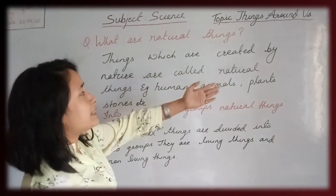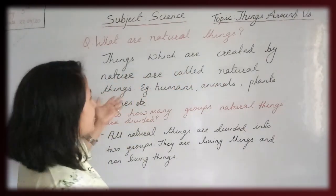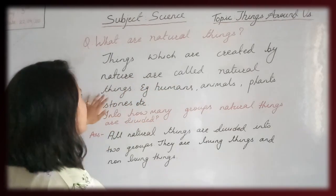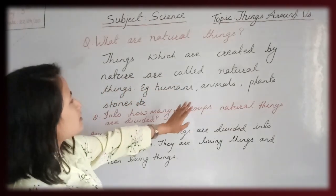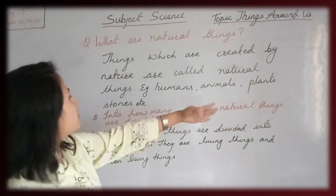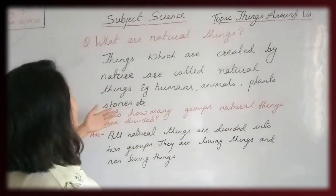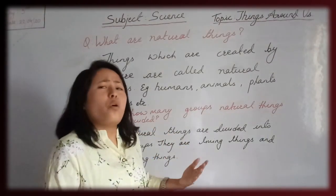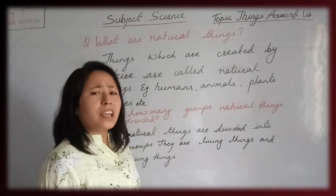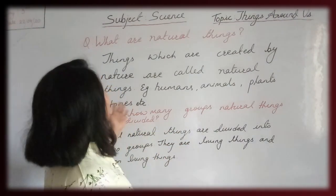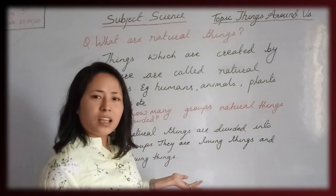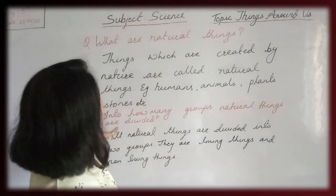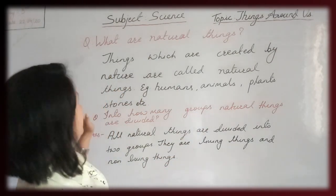Things which are created by nature are called natural things. For example, humans, animals, plants, stones, etc.